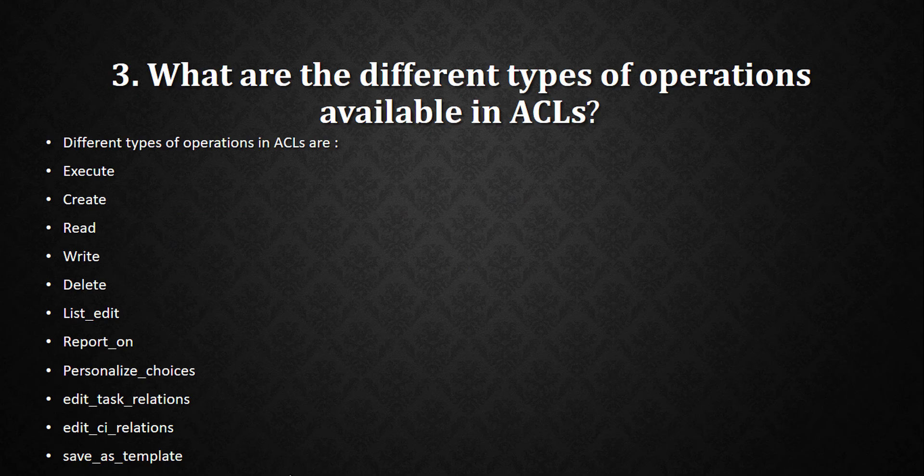The next question is: what are the different types of operations available in ACL? This is an important question, but you don't have to name all operations — four to five is enough. The operations include: execute, create, read, write, delete, list_edit, report_on, personalize, in_score, choices_edit, edit_task_relations, edit_ci_relations, save_as_template, and add_to_list. If you want to know the exact use of each, refer to the ServiceNow docs.